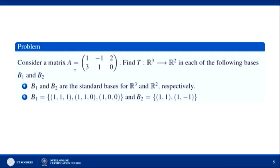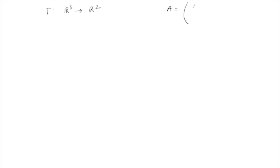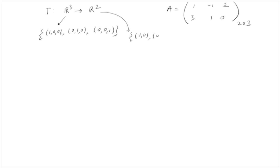Consider the matrix A = [[1, −1, 2], [3, 1, 0]]. We have to find a linear transformation T from R³ to R² for the following cases. The first case uses the standard bases of R³ and R². The standard basis of R³ is {(1,0,0), (0,1,0), (0,0,1)} and the standard basis of R² is {(1,0), (0,1)}.